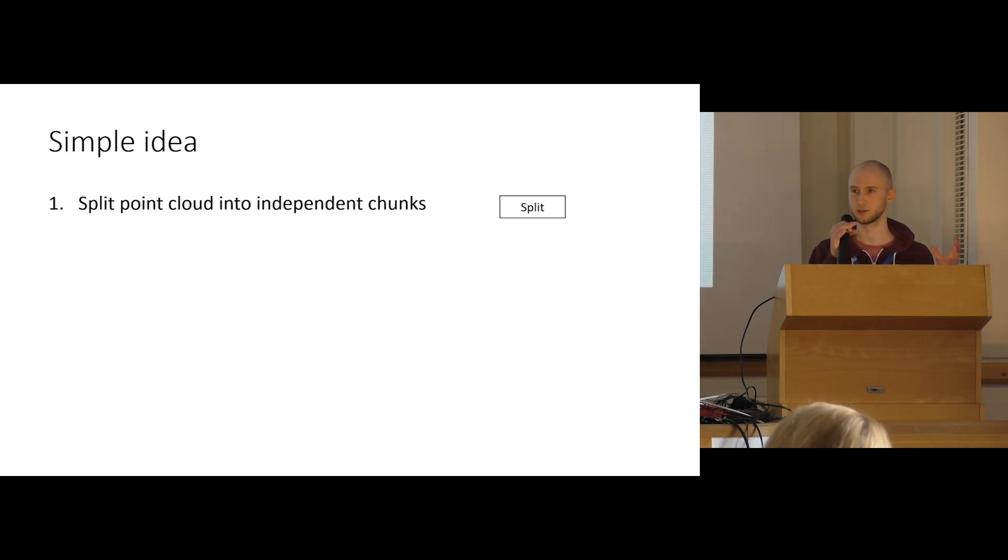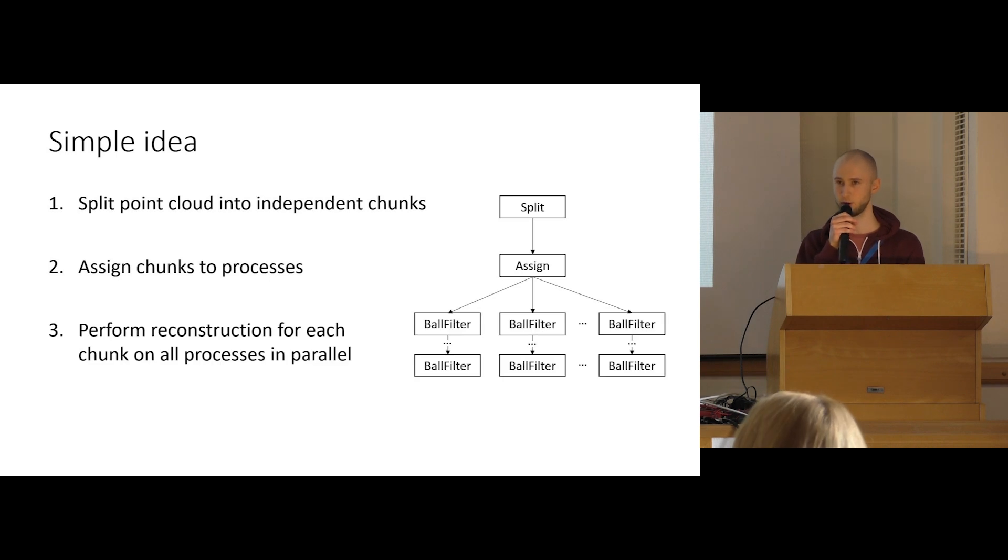It's a very simple idea, actually. We just take the input point set and split it into chunks that can then be processed independently from each other. Then we distribute those chunks to the processes in as fair a way as possible, like equal distribution. Then we can work on the actual surface reconstruction within the individual chunks. And then we have to somehow merge the surfaces within each chunk back together to get the final model.